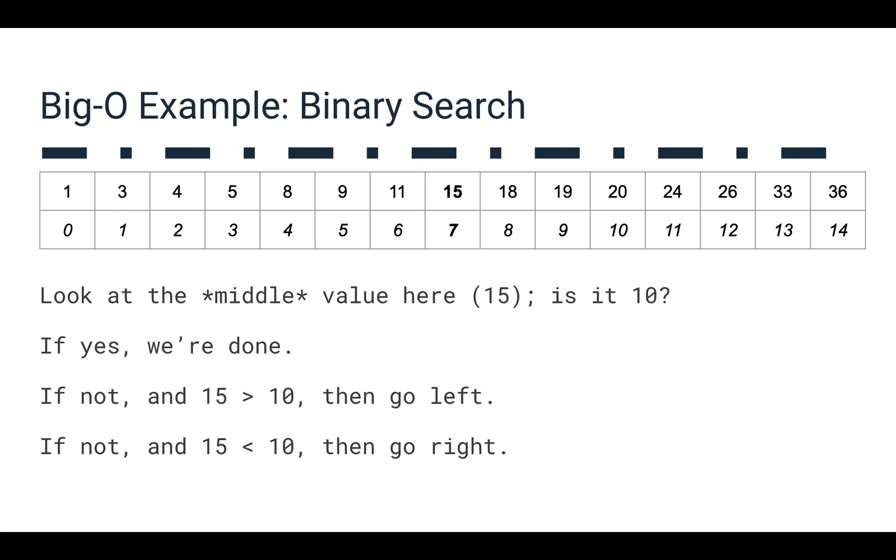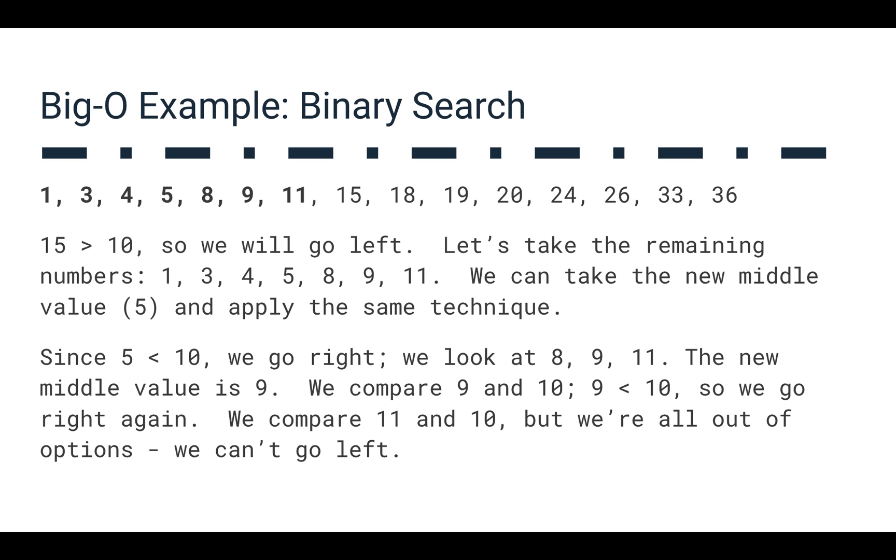So let's look at the middle value here. At index 7, we have the value 15. If we're trying to find 10, we can say, well, is 15 equal to 10? No, it's not. So if 15 is greater than 10, then we need to go to the left side, because 10 is going to be on the smaller side of this value. And if 15 is less than 10, then we have to go to the right side, because 10 is going to be larger than the value we're looking at. Here we can see that 10 is less than 15. So we have to look at this smaller set of data or smaller number of values.